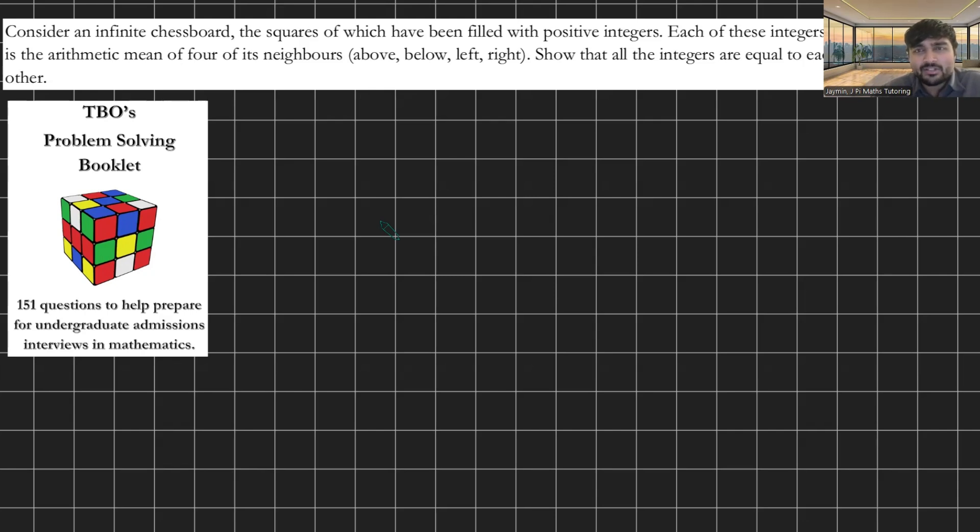Okay, how do we reach a contradiction here? What we're going to do is suppose for contradiction that not all the integers are the same, and we're going to let S be the smallest integer on the chess board.